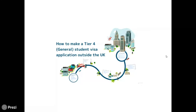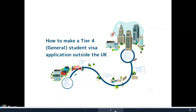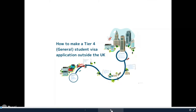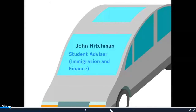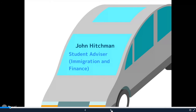Hello, good afternoon and welcome to this presentation. This is a presentation about how to make a tier 4 general student visa application outside the UK. My name is John Hitchman, I'm a student advisor at Immigration and Finance. I've got a dual role at SOAS but part of my role is to talk to students and applicants like yourselves about how to get a visa to come to the United Kingdom.